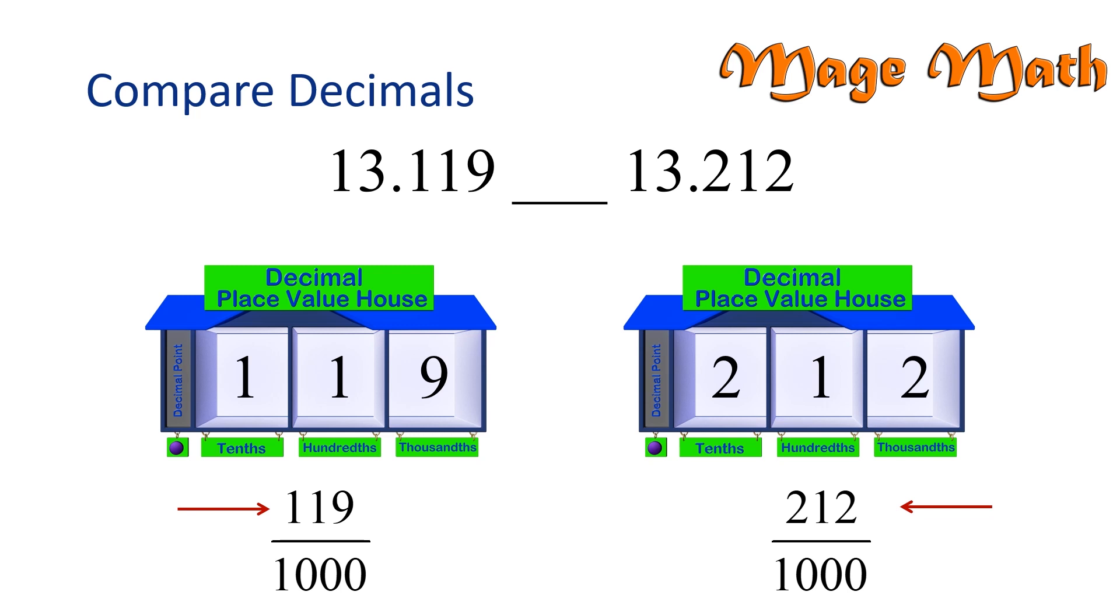We found that 13 and 119 thousandths is less than 13 and 212 thousandths. Just in case you forget which direction the symbol faces, always have the open part towards the larger number. Think of it as a hungry, hungry alligator that likes to eat large numbers. Very good.